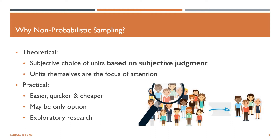The units themselves, not the wider world, are the primary foci of interest. Under practical purposes, non-probability sampling is often used because the procedures used to select units for inclusion in the sample are much easier, quicker, and cheaper when compared with probability sampling. For students doing dissertations at the undergraduate and master's level, such practicalities often lead to the use of non-probability sampling techniques.